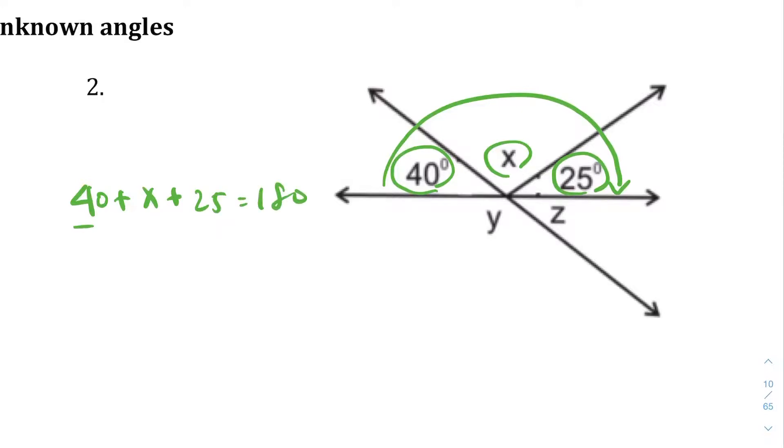We're going to combine the like terms here. 40 + 25 is going to give you 65 + x equals 180. We'll subtract 65 from both sides. You should end up with x equals 115 degrees. So 115 degrees is what x equals.